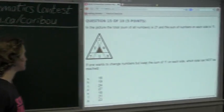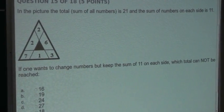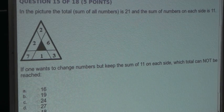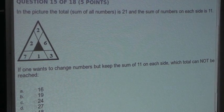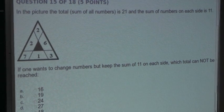So the question is, in the picture the total sum of all numbers is 21 and the sum of numbers on each side is 11. If one wants to change numbers but keep the sum of 11 on each side, which total cannot be reached.